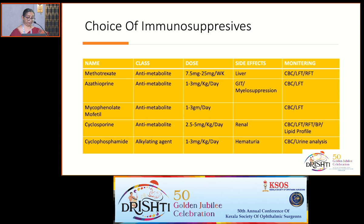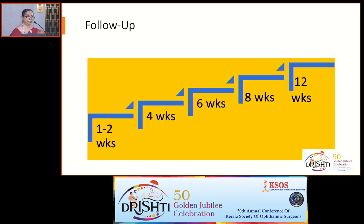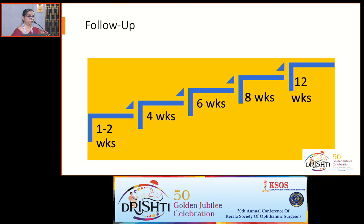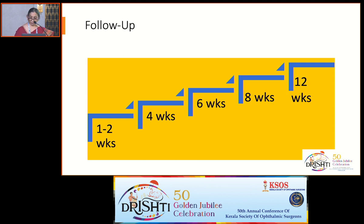Once started on these medications, patients are followed up after two weeks with repeat CBC, SGOT, SGPT, creatinine, BP, and blood sugar. Then seen after one month, one and a half months, two months until stabilized and confirmed responding to immunosuppression. Thereafter for the rest of the treatment course — every three months with lab workup.